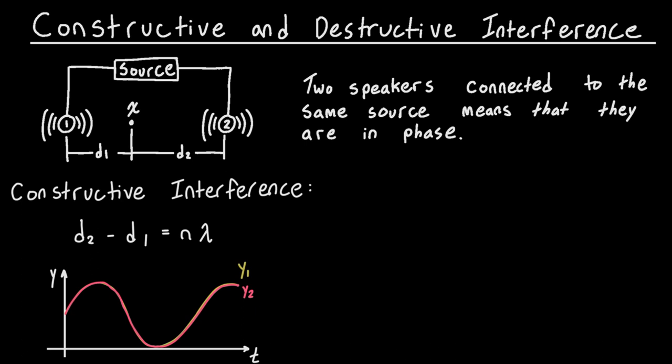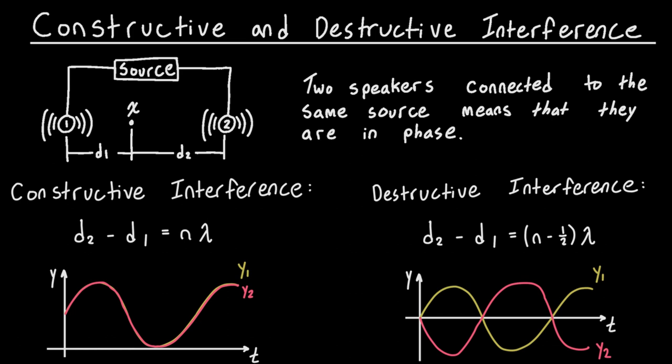For destructive interference, our equation looks very similar except instead of n we have n minus one-half. So the equation for destructive interference is D2 minus D1 equals (n minus one-half) times lambda. What we're saying is if the difference between those two distances is half a wavelength off, then those waves will be out of sync and they will cancel each other out.